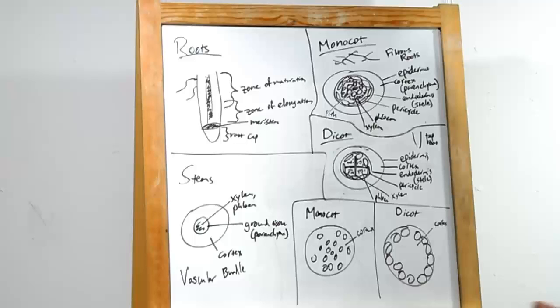Xylem and phloem are the important parts. That's the actual vascular tissue that's going to help move stuff through the plant, kind of like our circulatory system.